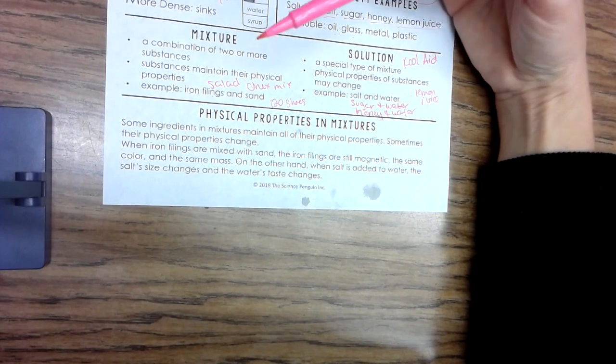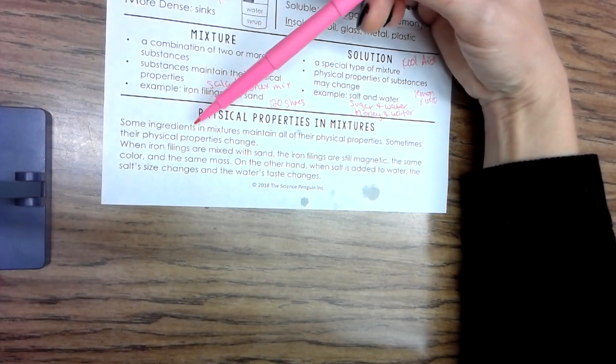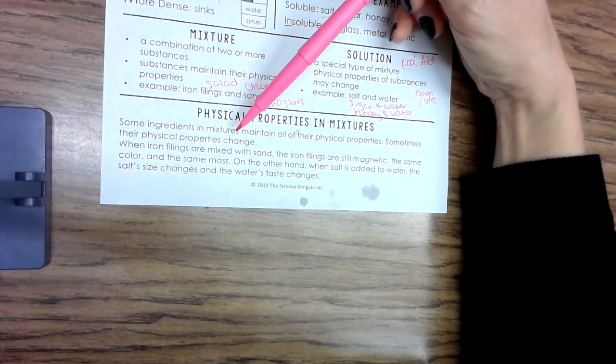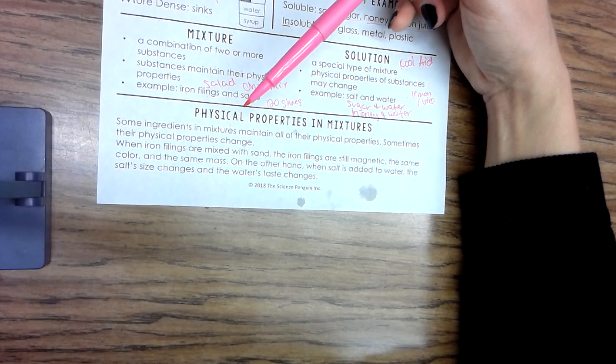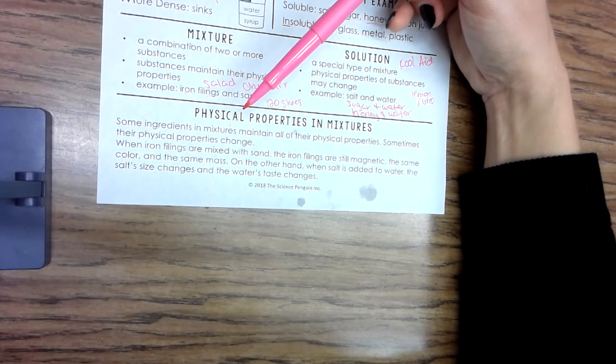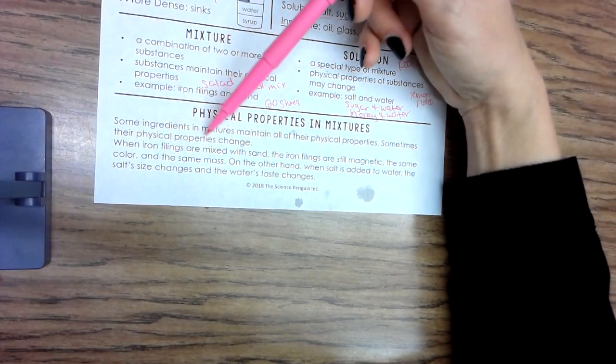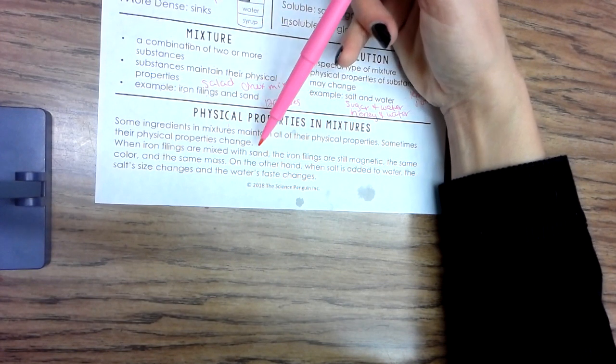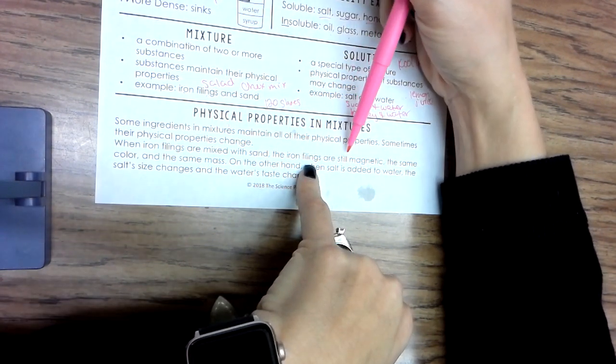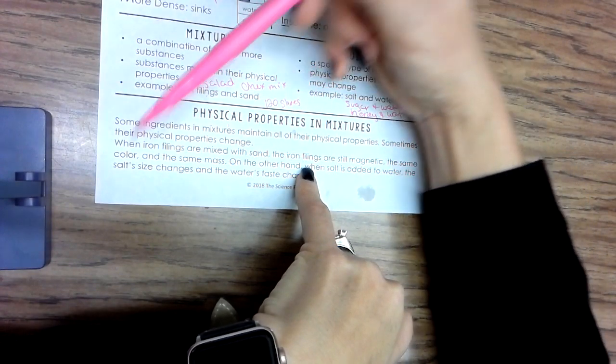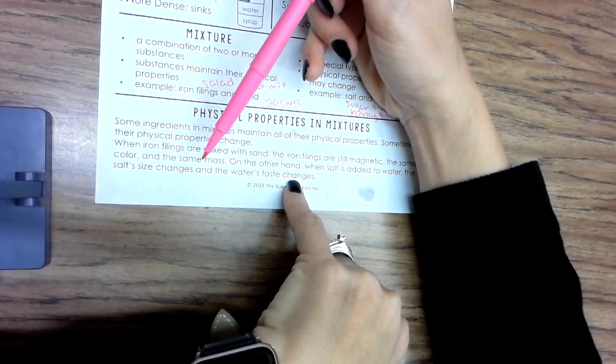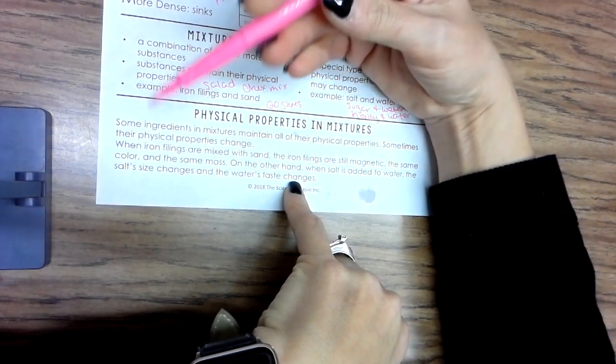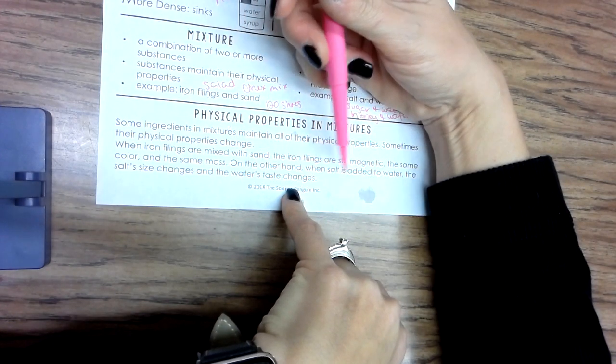Physical properties in mixtures: still talking about mixtures here. Some ingredients in mixtures maintain all of their physical properties. Sometimes their physical properties change. Just like that cup of ice and soda - even though the ice is still there, it is melting, so sometimes their physical properties do change. It will melt. When iron filings are mixed with sand, the iron filings are still magnetic, the same color, and the same mass. On the other hand, when salt is added to water, the salt's size changes and the water's taste changes.